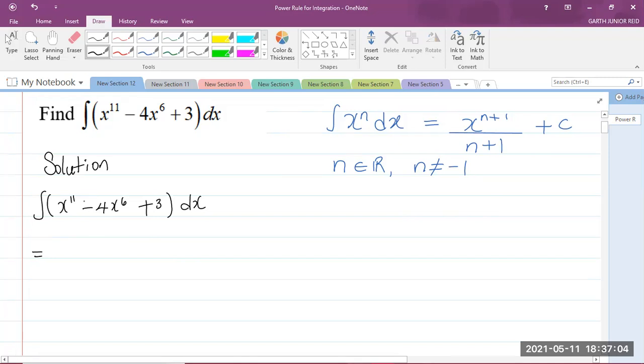This is equal to, you're going to integrate each term separately. So, the integral of x to the power of 11, you add 1 to the power. That's x to the power of 11 plus 1, and you divide by that same power, which is 11 plus 1. So, we have integrated x to the power of 11.